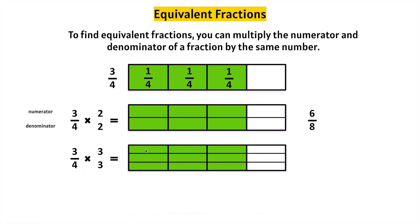Let's count all the equal parts: one, two, three, four, five, six, seven, eight, nine, ten, eleven, twelve. The denominator will be twelve.